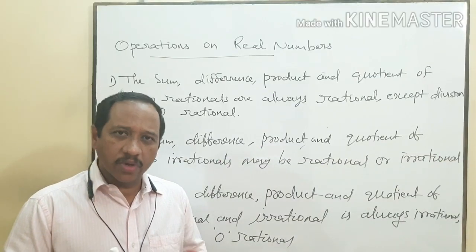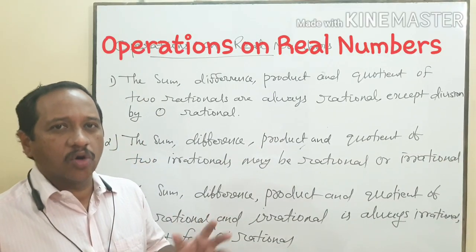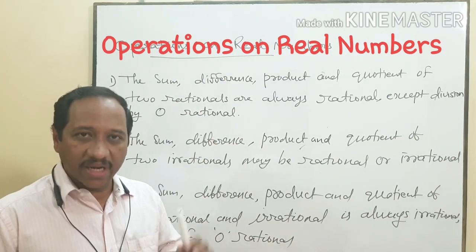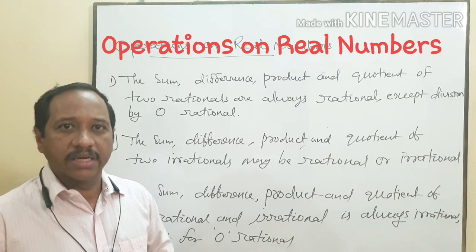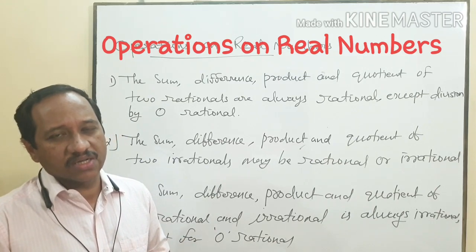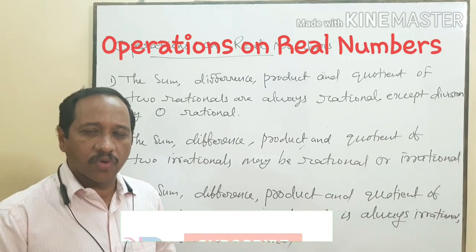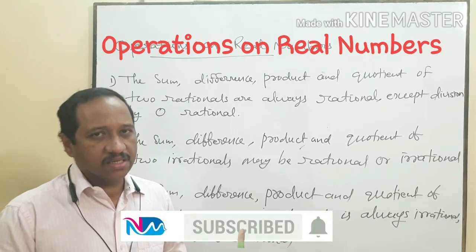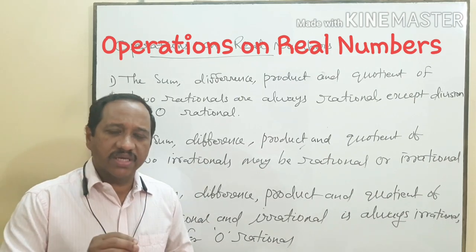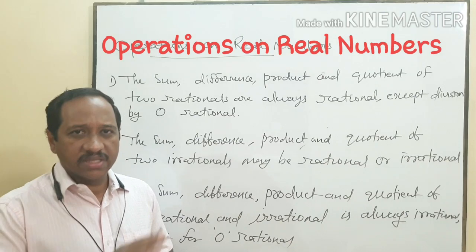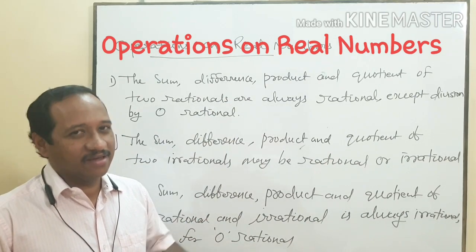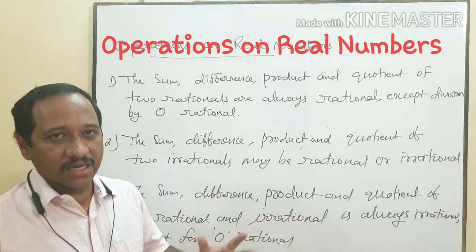In today's session, I am going to deal with the basic operations on the real numbers. Real numbers means rational and irrational numbers. This is a section exclusively for class 9th students. You know what are the four basic operations — addition, subtraction, multiplication and division. Here we are going to see what are the results of these four basic operations on real numbers.